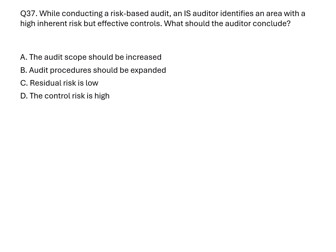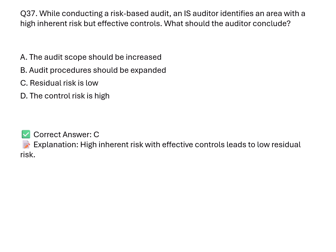Question 37. While conducting a risk-based audit, the auditor identifies an area with high inherent risk but effective controls. What should be concluded? A. Increase the audit scope. B. Expand audit procedures. C. Residual risk is low. D. The control risk is high. Correct answer: C. Explanation: Effective controls reduce the residual risk even in high-risk areas. That's why the remaining or residual risk is considered low.